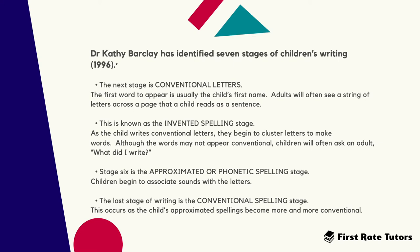In stage six, called the approximated or phonetic spelling stage, children begin to associate sounds with letters. The final, seventh stage is the conventional spelling stage, which occurs as the child's approximated spellings become more and more conventional and begin to resemble normal adult writing.